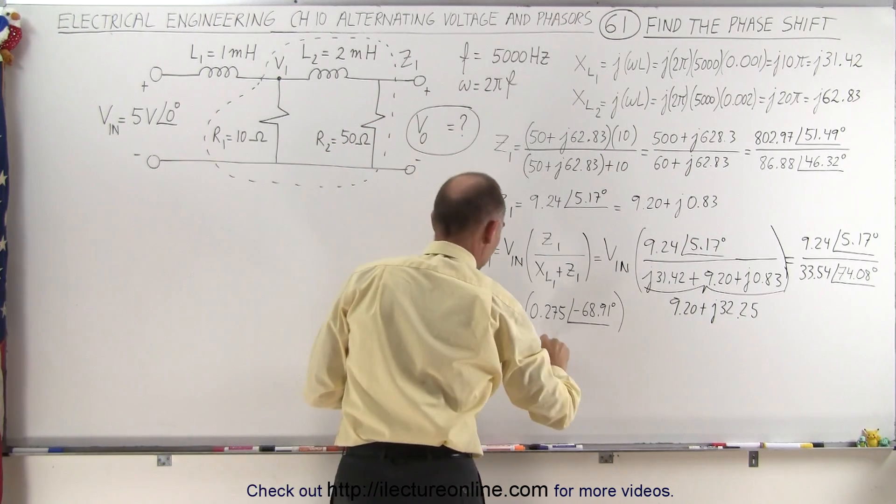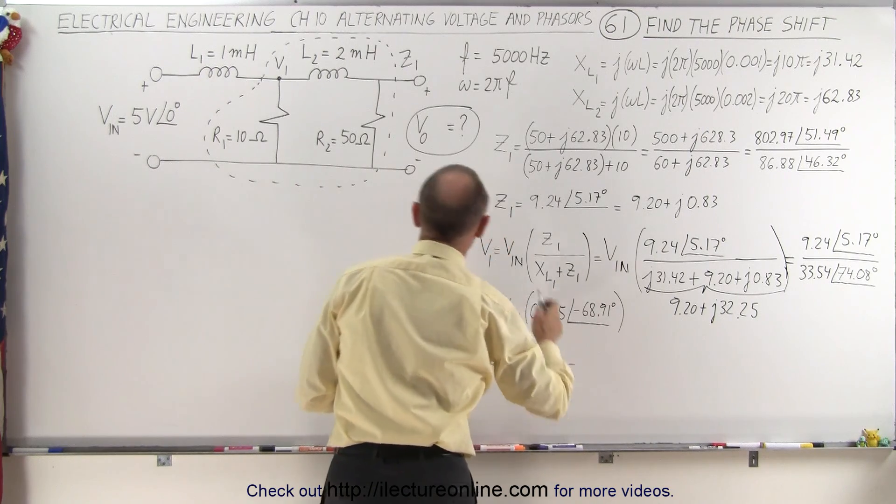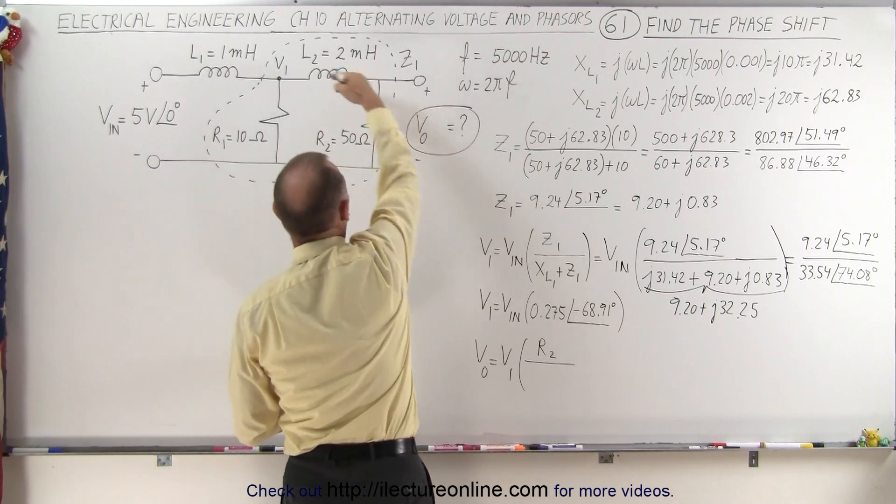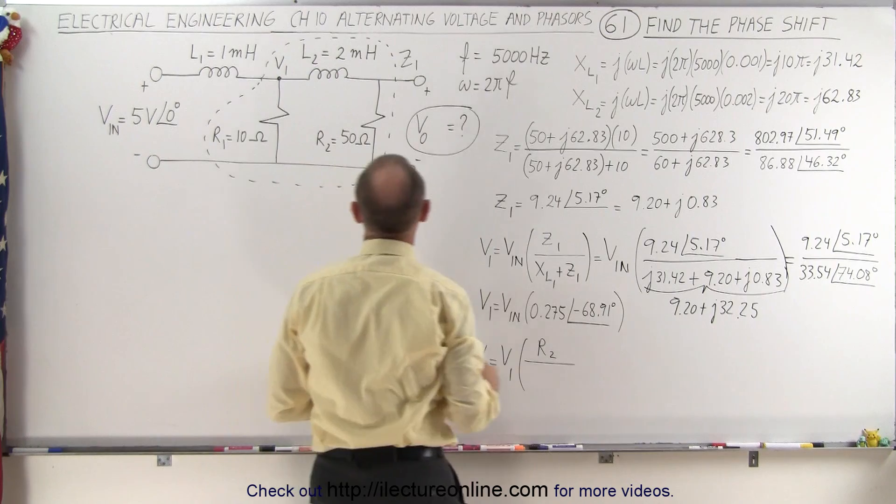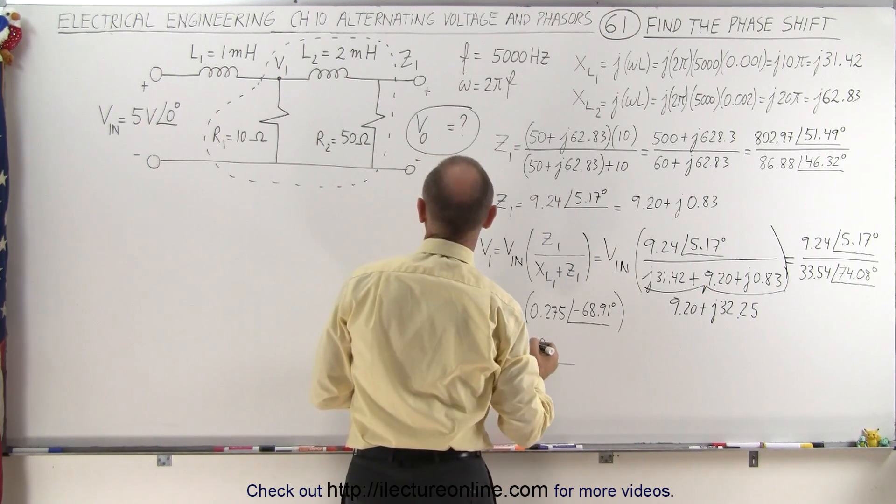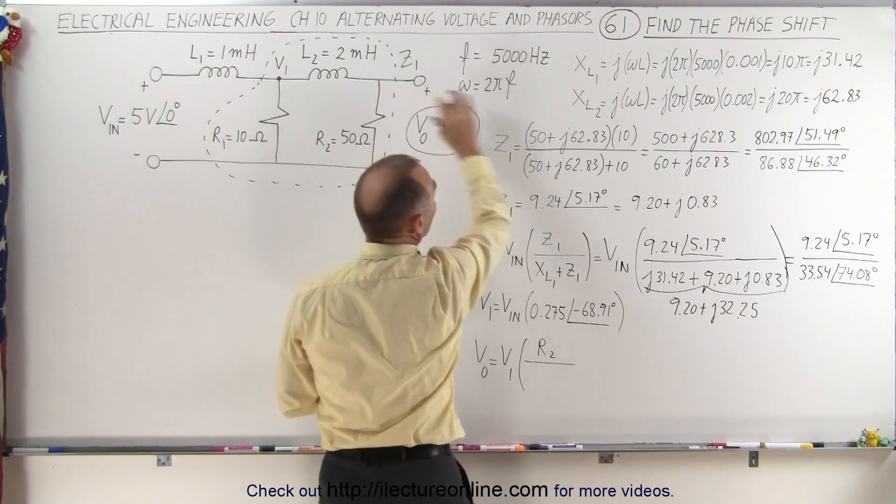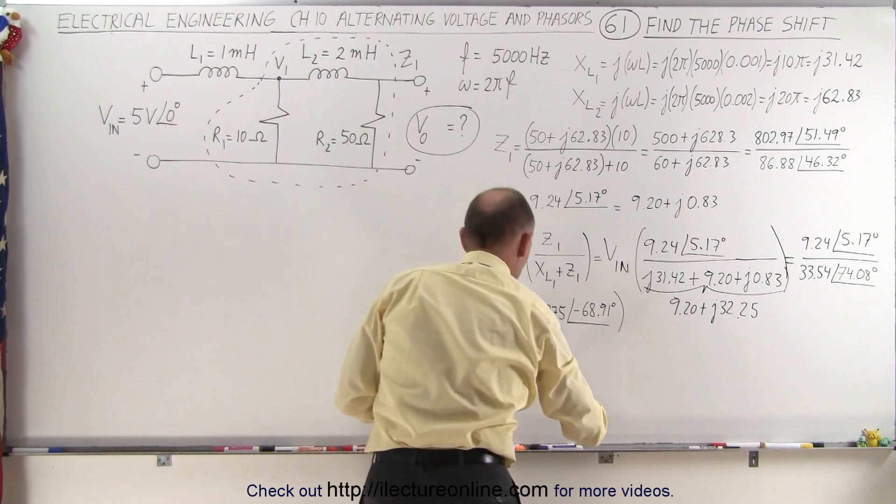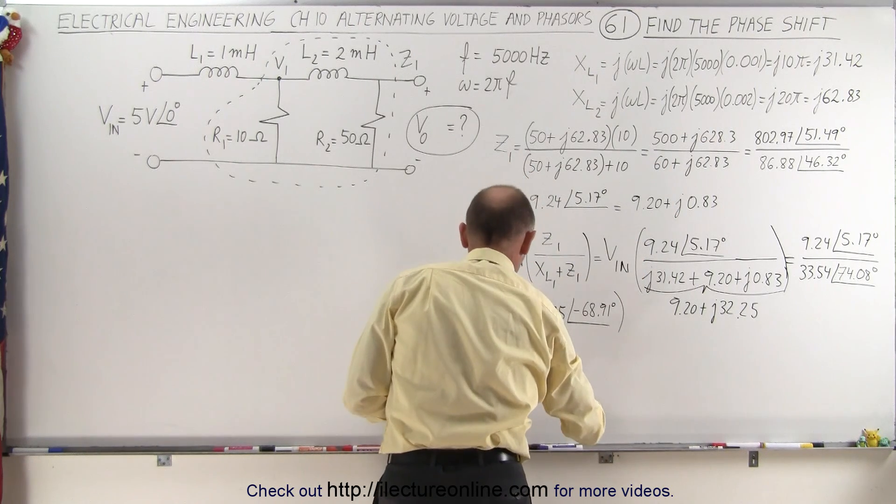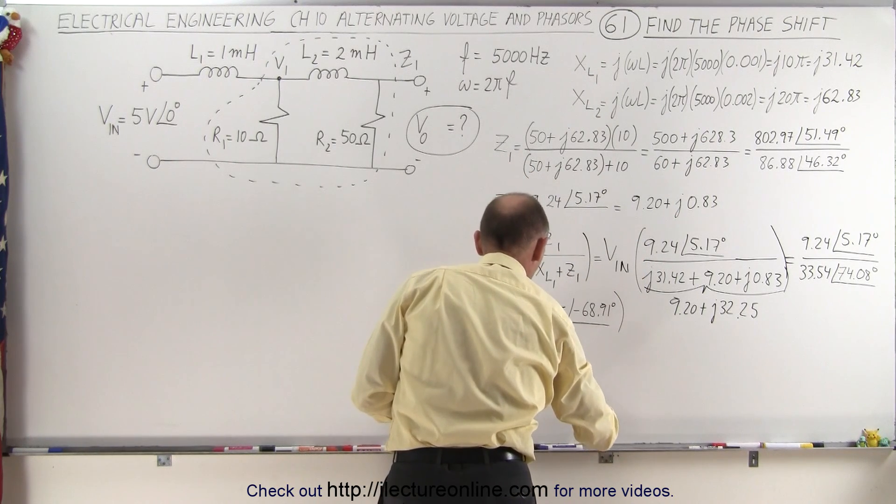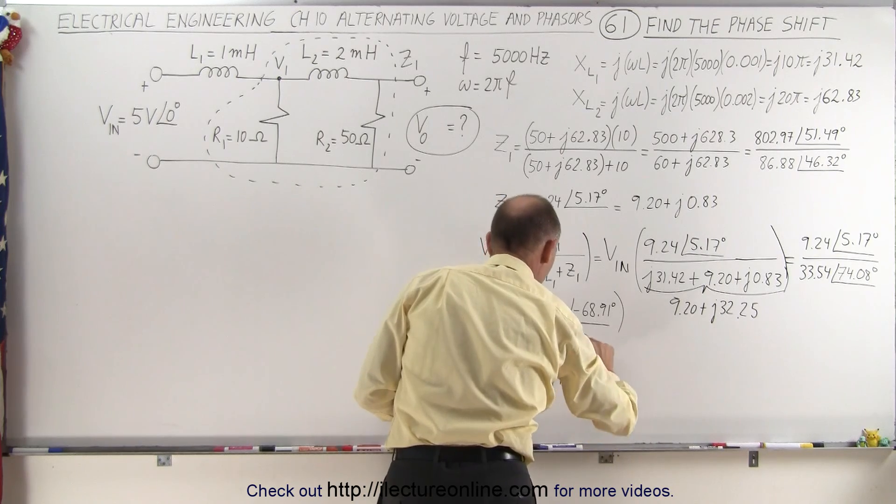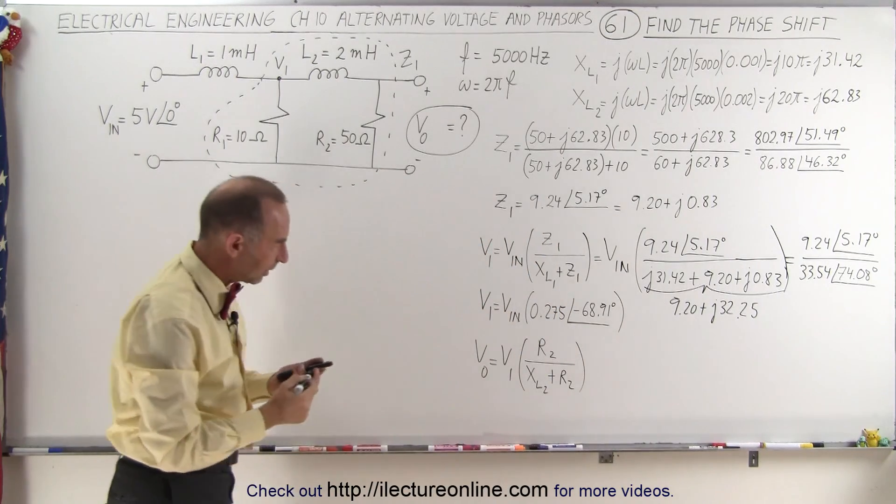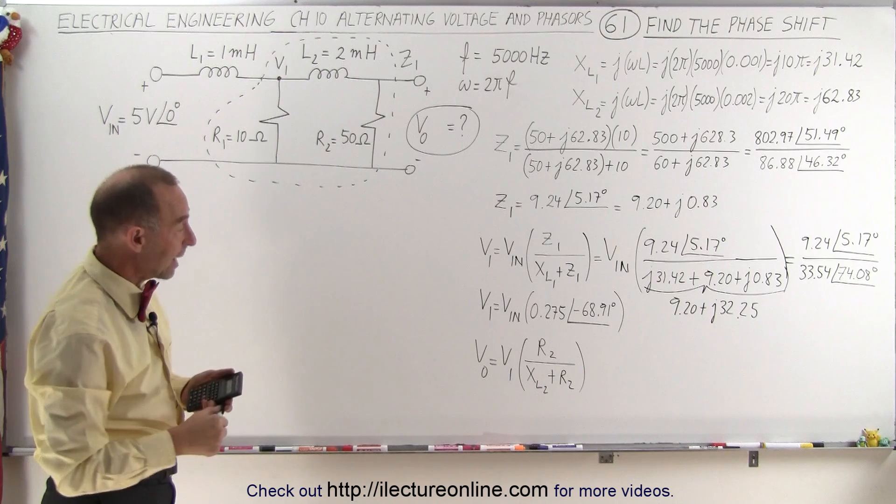We're going to take the impedance, in this case resistance of R2, divided by the impedance of this part of the circuit. So we get R2 in the numerator, that's the voltage drop across the resistor, compared to the voltage drop across this branch. So that would be XL2 plus R2. Here you can clearly see how we're going to calculate the output voltage.